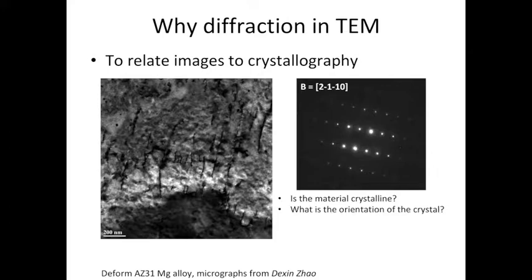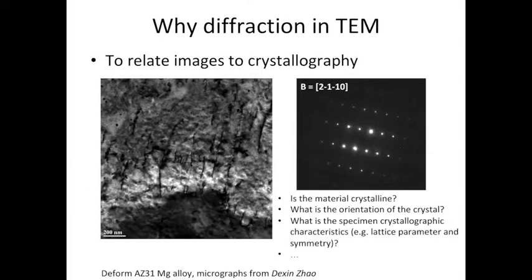From the diffraction pattern, we can also tell the orientation of the crystal. In this case specifically, we know that the crystal is tilted to the [2-1-10] orientation. We can also obtain the specimen's crystallographic characteristics such as lattice parameter and symmetry. For lattice parameter, because the interspacing of those spots reflect the d-spacing or interplanar spacing of the crystal, we can work out the lattice parameter of the specimen. Also by looking at the shape of the diffraction pattern, it's rectangular, so that tells us it has a two-fold symmetry in this orientation.